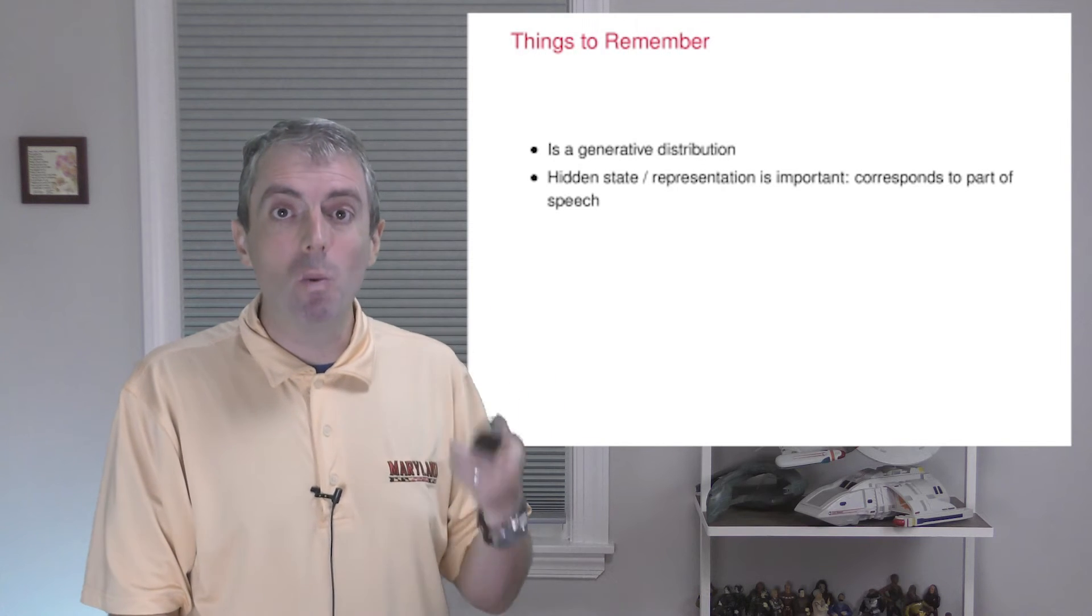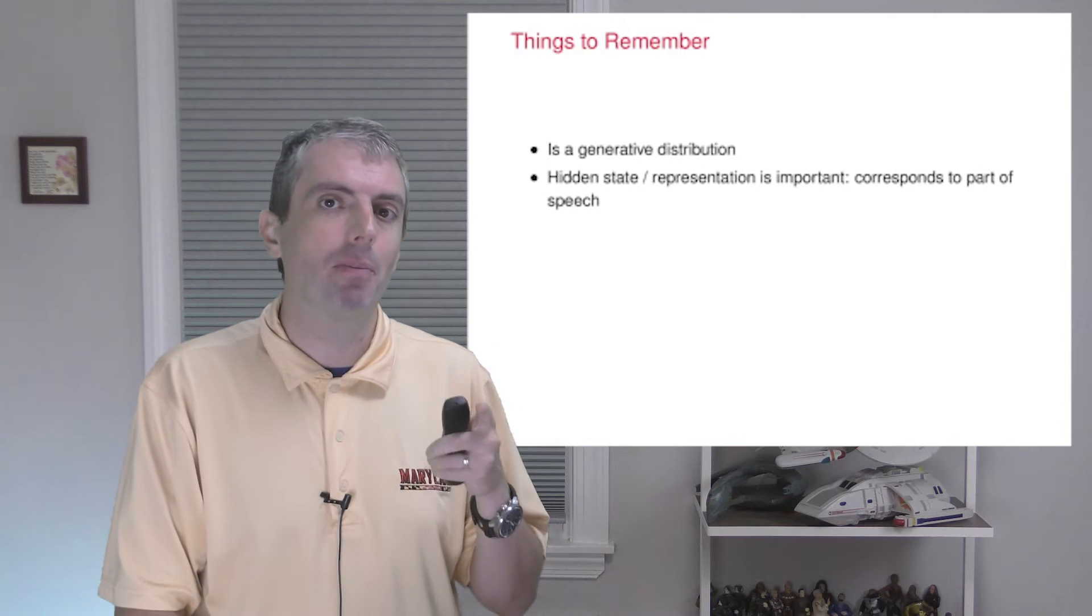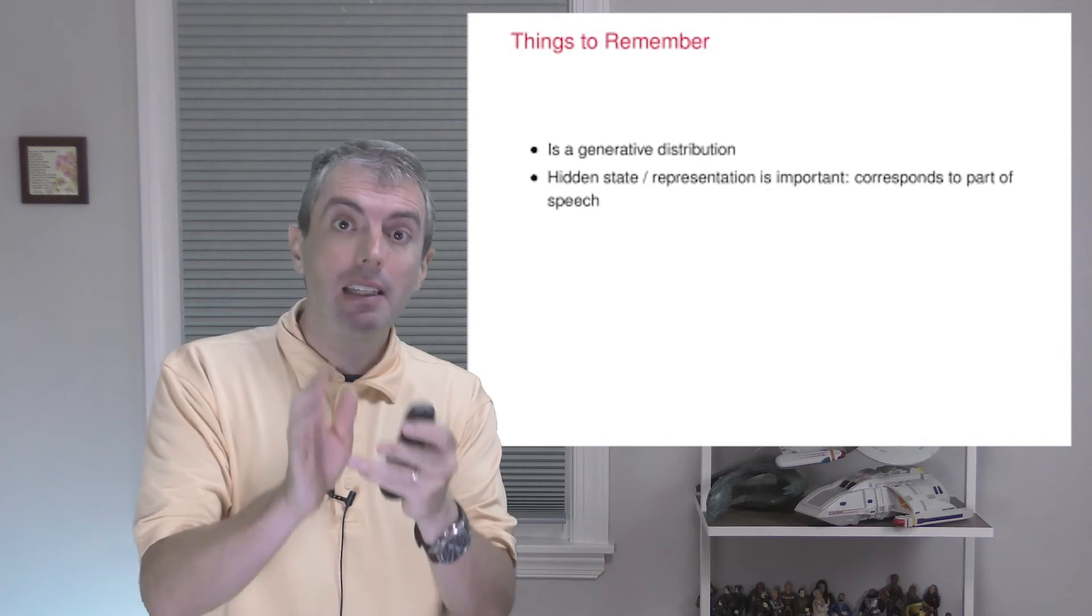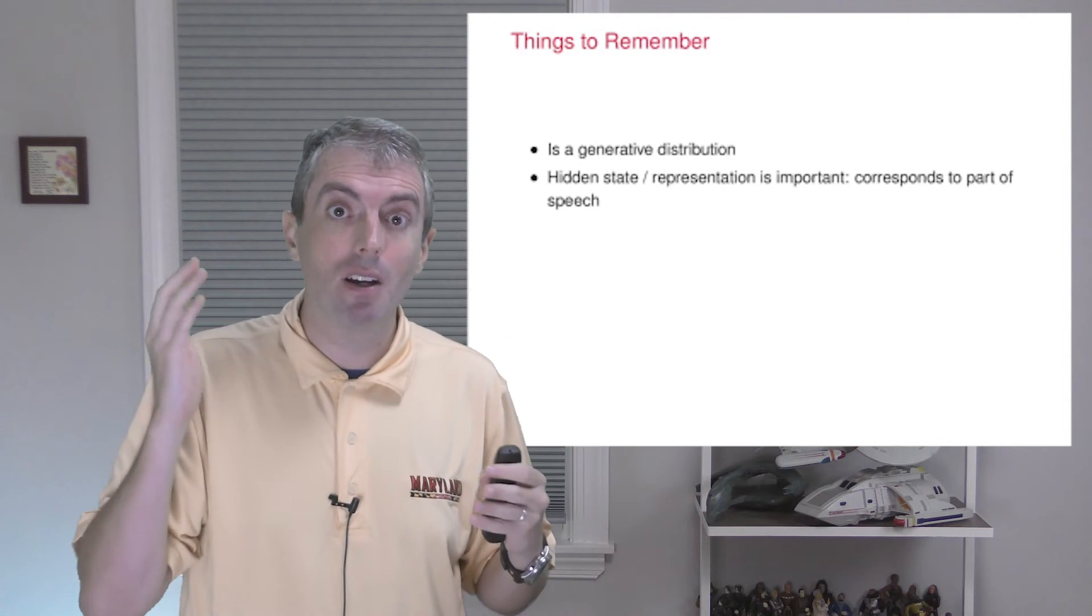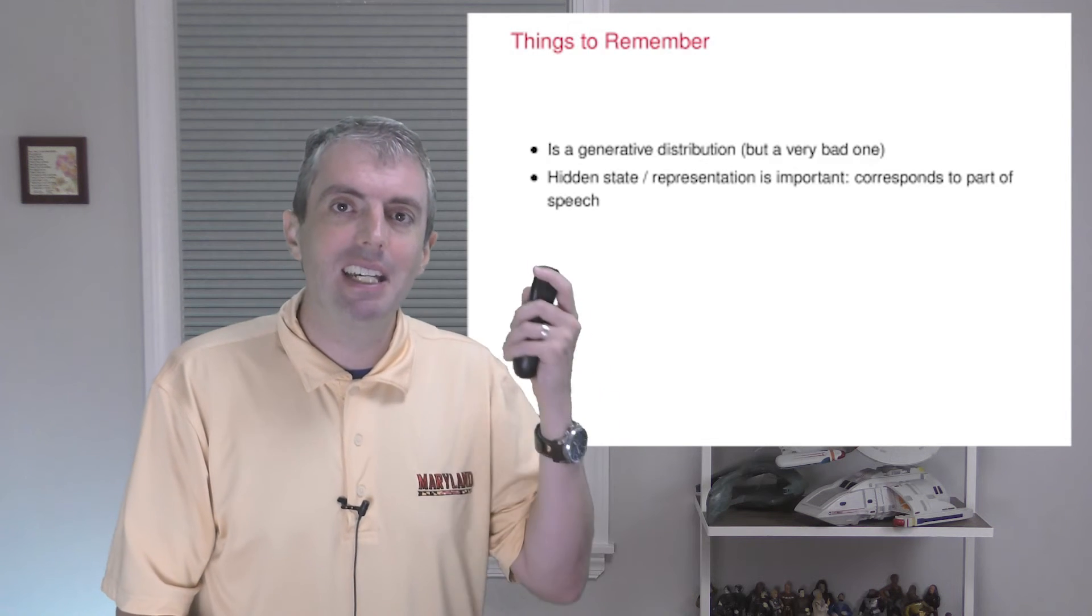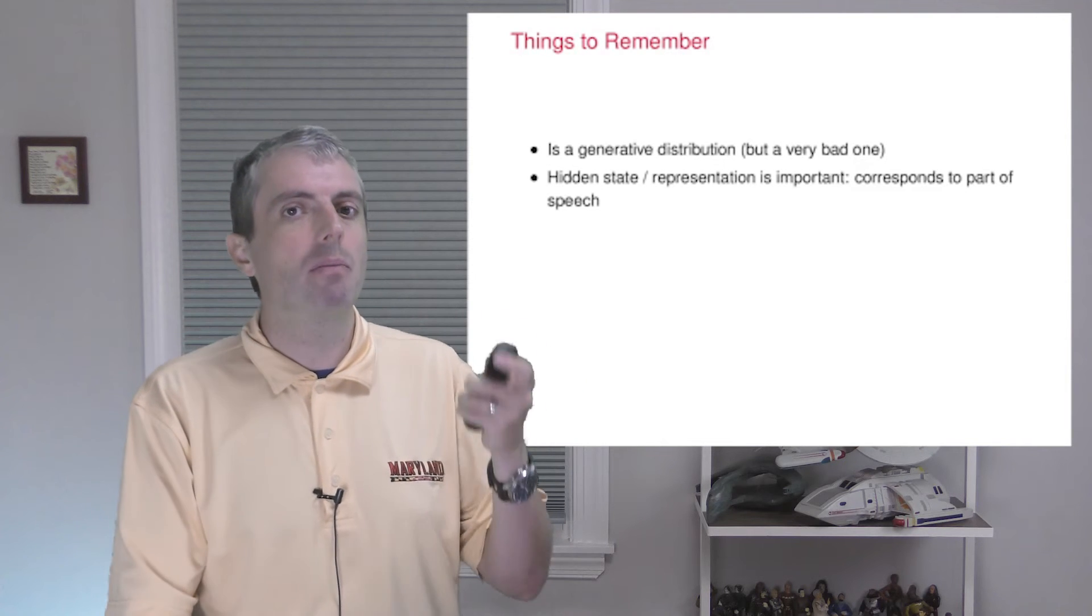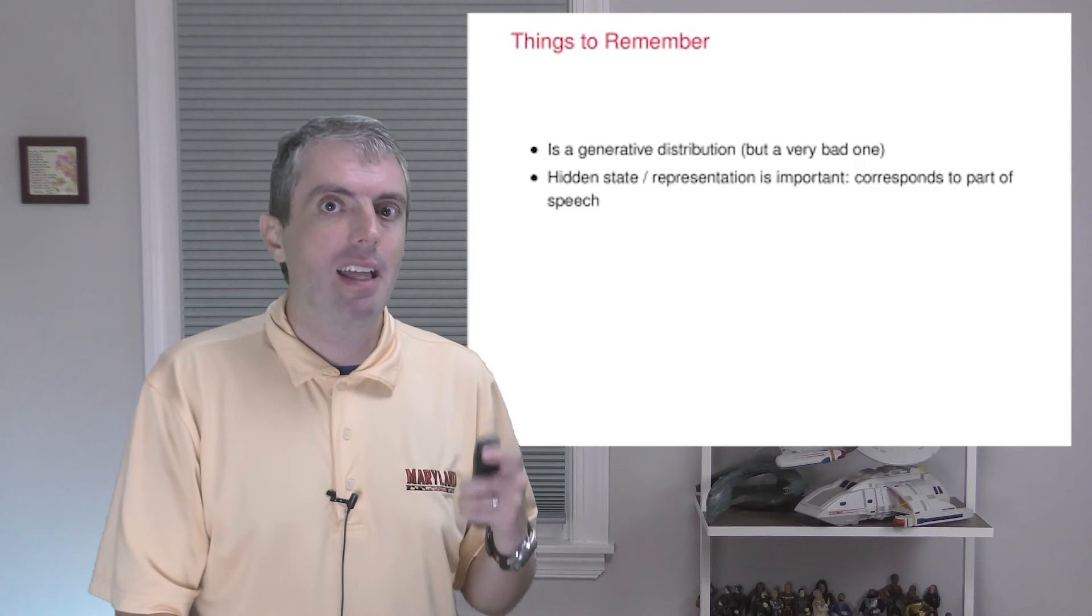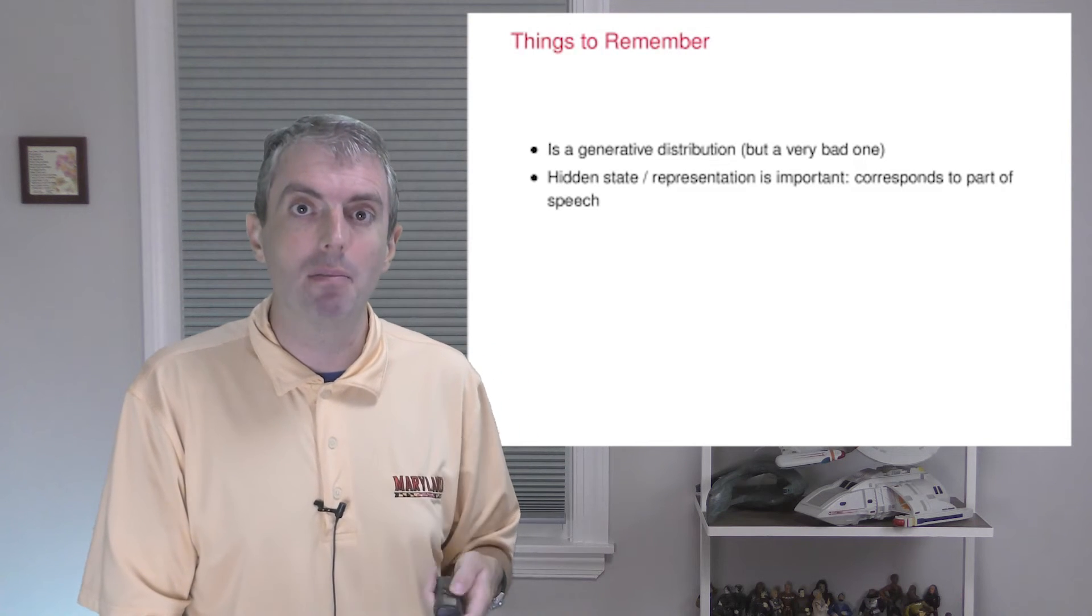But before we go further in the next video, I want to remind you a little bit about the properties of a hidden Markov model now that you know what it is. First, it should be clear that this is a generative model. You can generate text from a hidden Markov model that looks like some kind of English. But that doesn't mean it's a good language model. Its job is not to generate the most fluent coherent text. That's more of a job for a real language model. Thus, you should probably not use perplexity to evaluate a hidden Markov model.